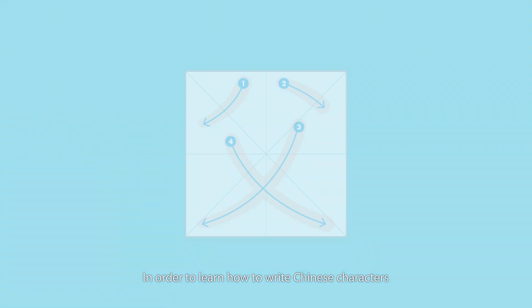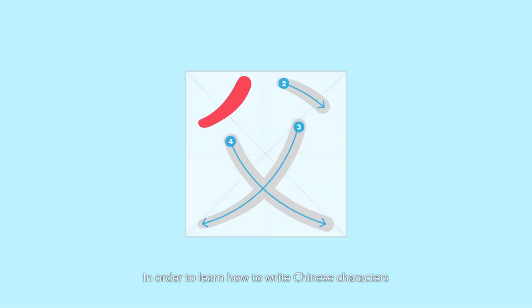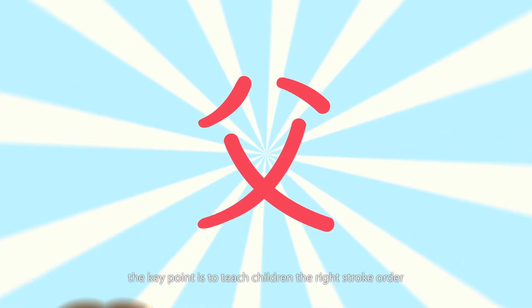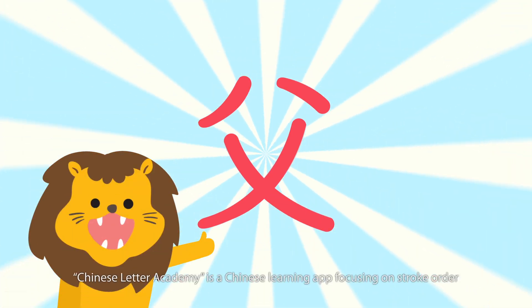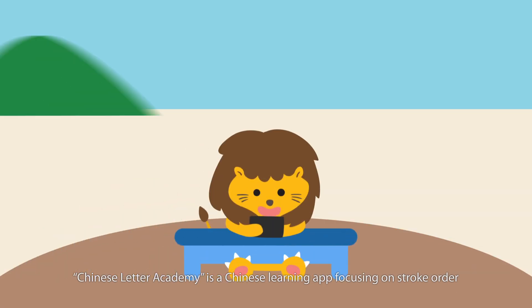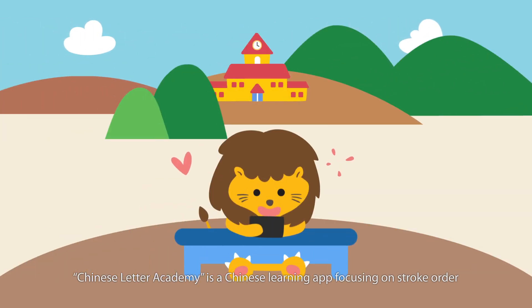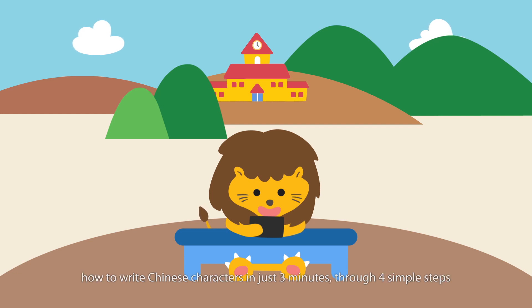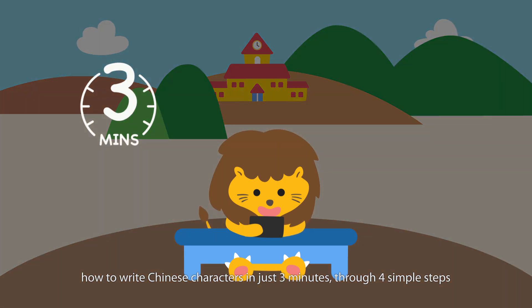In order to learn how to write Chinese characters, the key point is to teach children the right stroke order. Chinese Letter Academy is a Chinese learning app focusing on stroke order. Its interactive guardians and pictures teach children how to write Chinese characters in just 3 minutes through 4 simple steps.